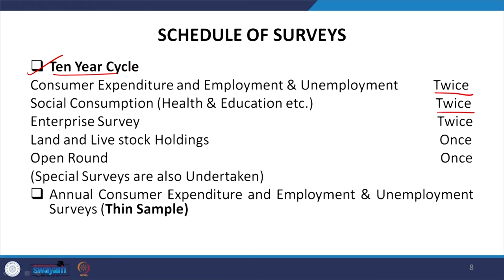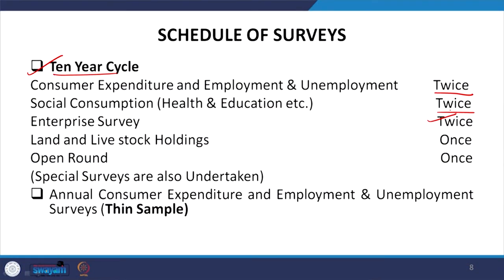For enterprise surveys, occurrence is also twice in the 10-year cycle. For land and livestock holdings it is once in 10 years. There are also open rounds — special surveys such as annual consumer expenditure rounds and annual rounds for employment and unemployment surveys. These are generally called thin rounds. Thin rounds usually cover a smaller sample. There is no clear cycle defined for open rounds, whereas in the big thick sample there is clarity related to cycle.